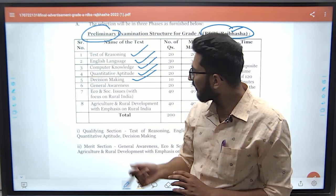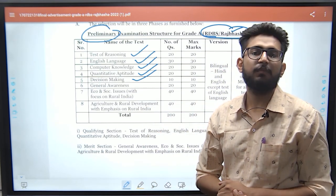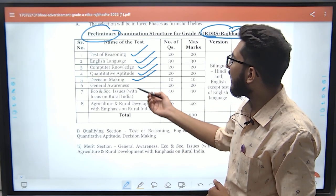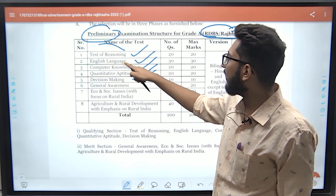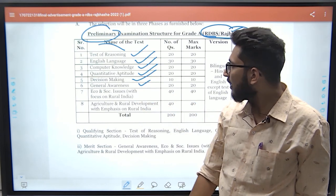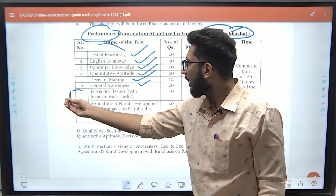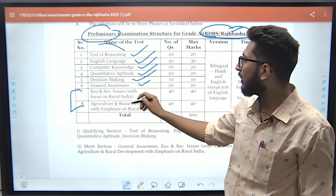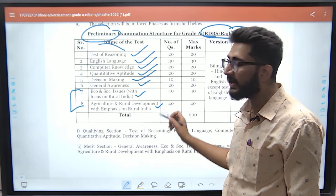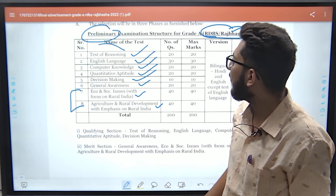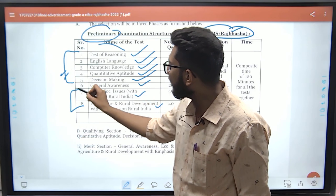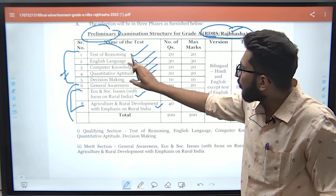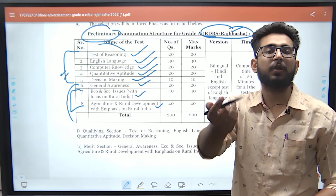Two years ago, when the NABARD notification came out, bank preparation students could easily crack it. NABARD then realized that bankers easily cracked the exam because their Reasoning, English, Computer, Quant, General Awareness, and Decision Making were all good. However, the last two tests — Economic and Social Issues and Agriculture and Rural Development — they did not focus on. So NABARD changed its exam pattern.